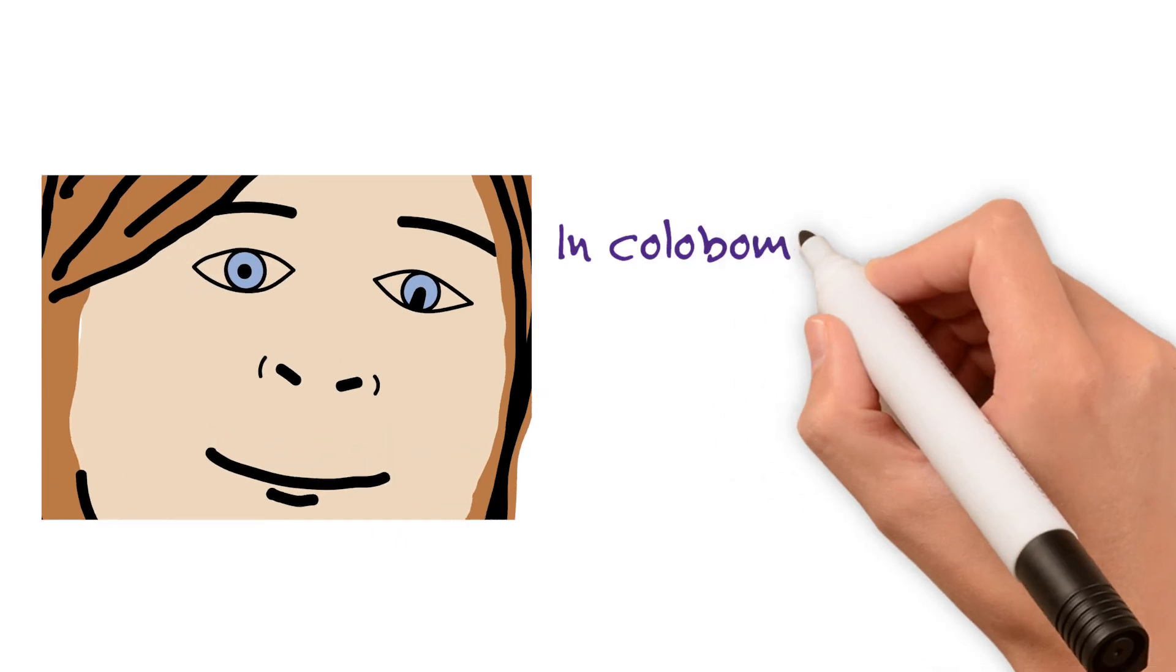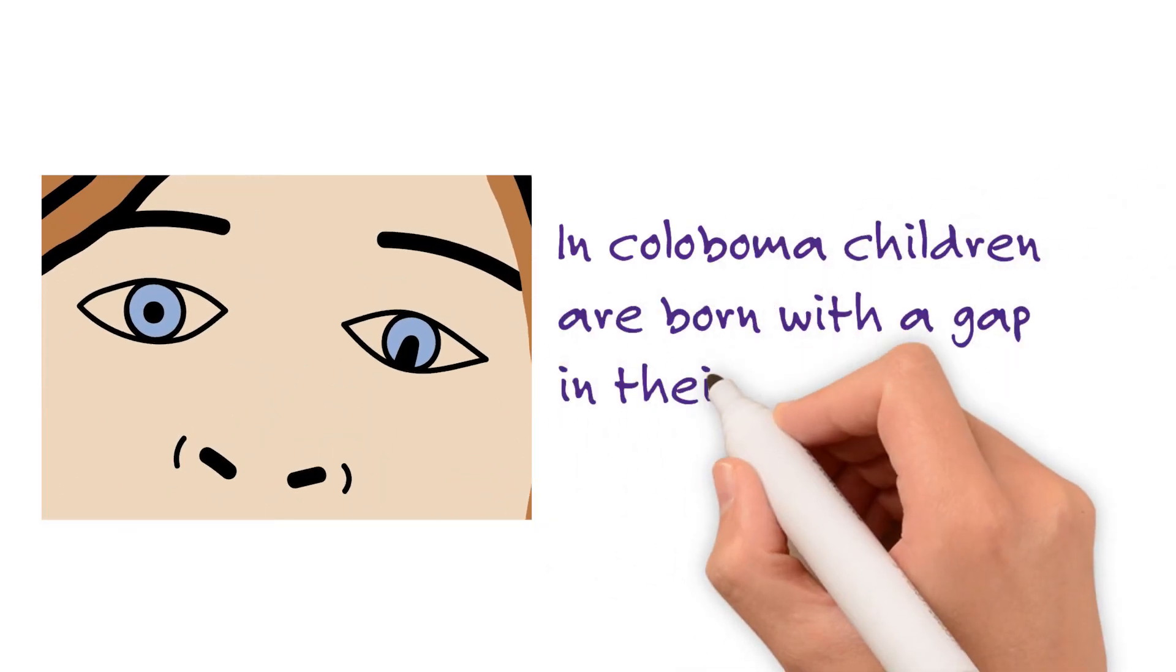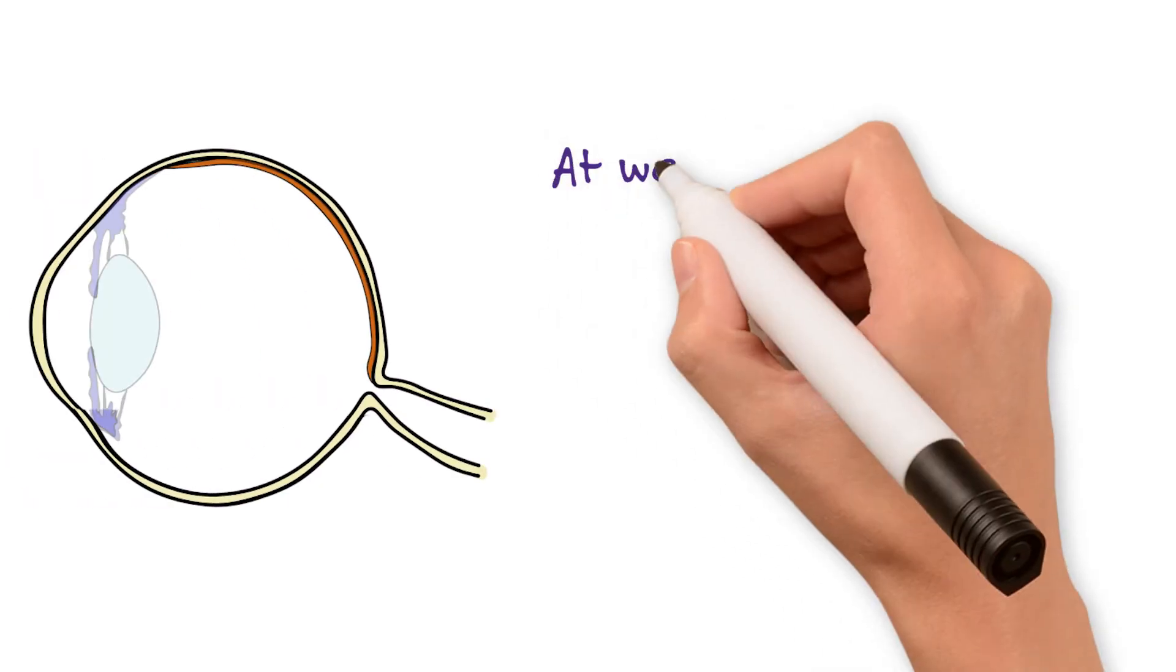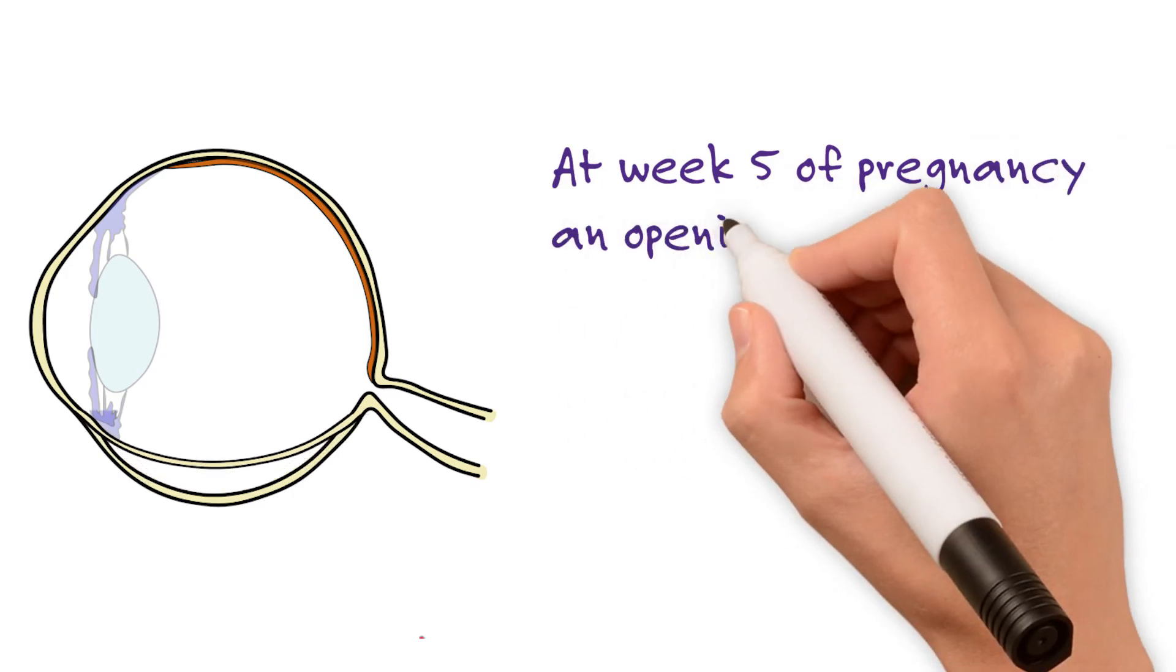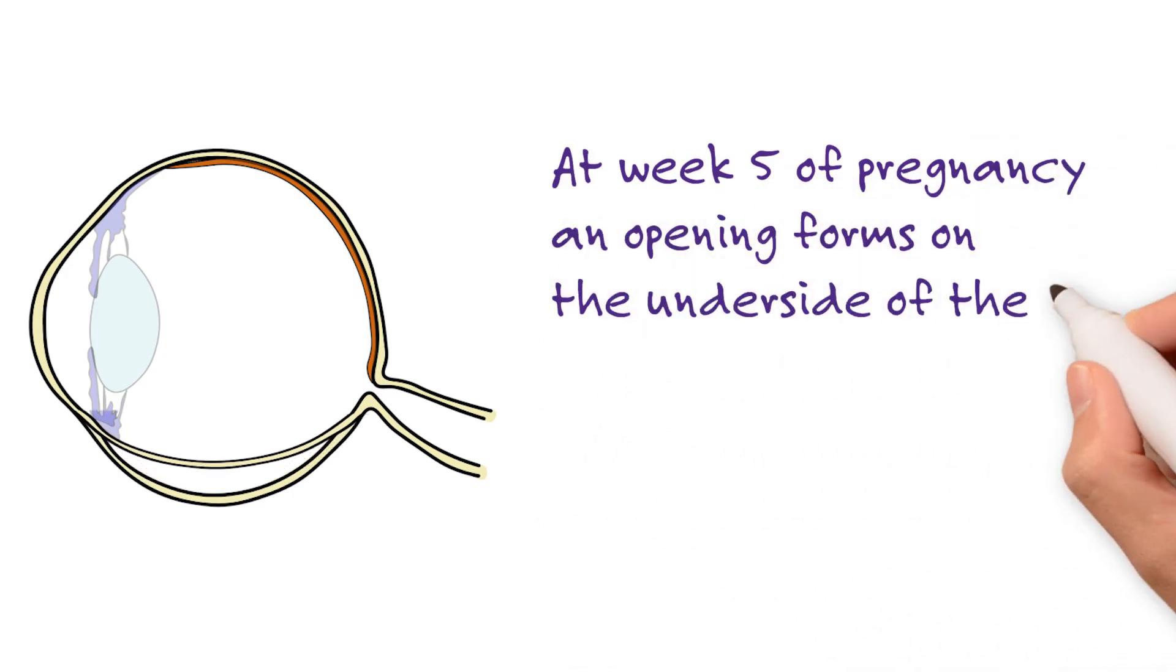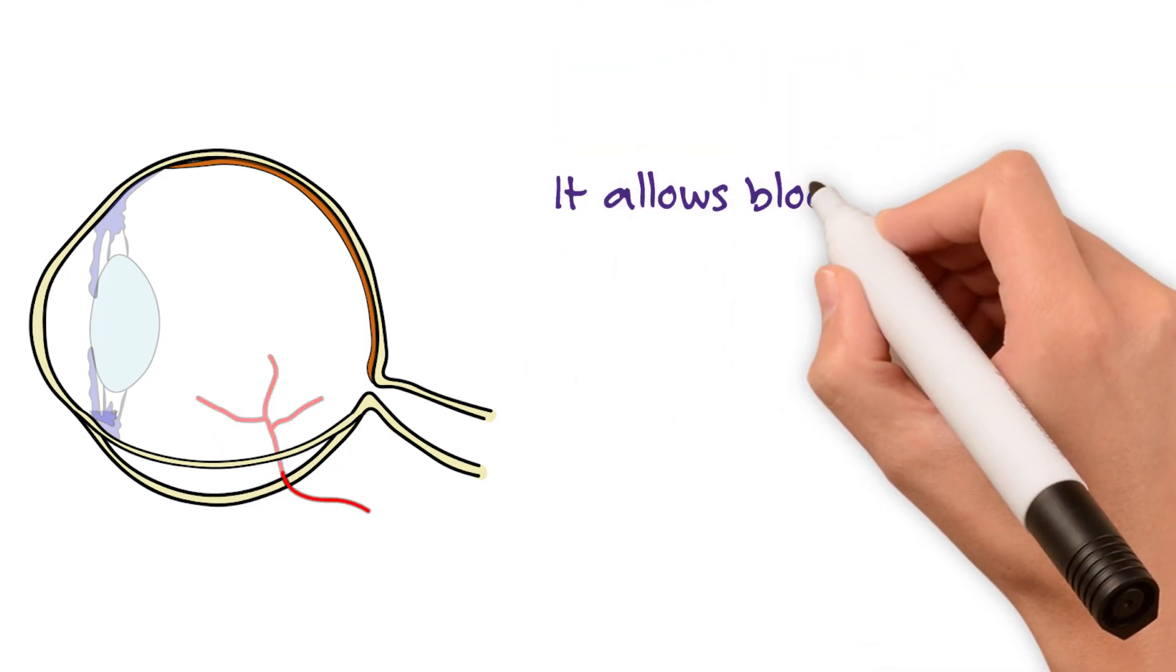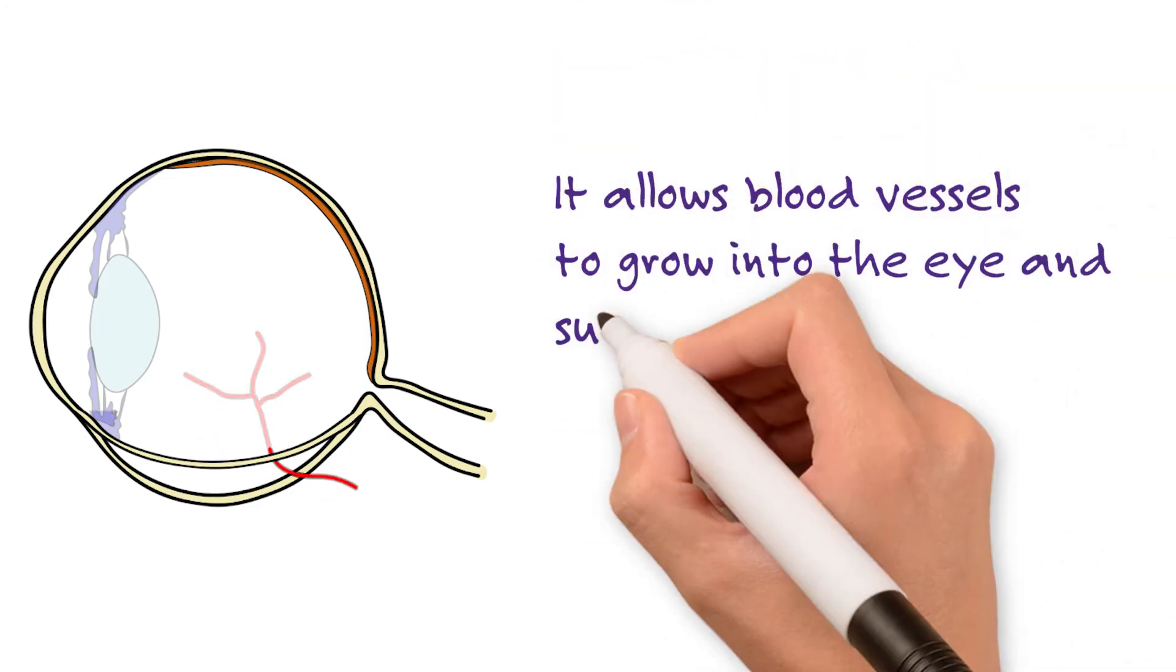In coloboma, children are born with a gap in their eye. At week 5 of pregnancy, an opening forms on the underside of the eye called the optic fissure. It allows blood vessels to grow into the eye and supply nutrients.